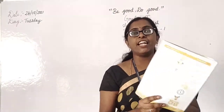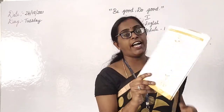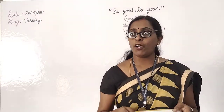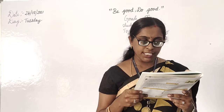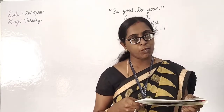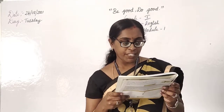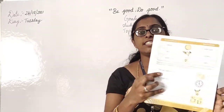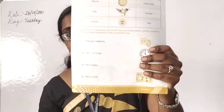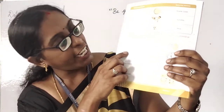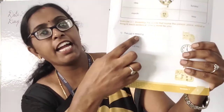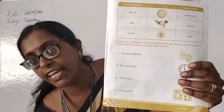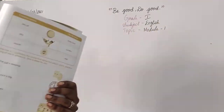Take out page number 5, children — workbook page number 5, Module 1, Exercise 3.1: Underline the words that name a person, place, animal, or thing in each sentence. One is done for you — the cat is sleeping. Can you see it? Now let's do the second one together. Please take your pencil and do along with me.